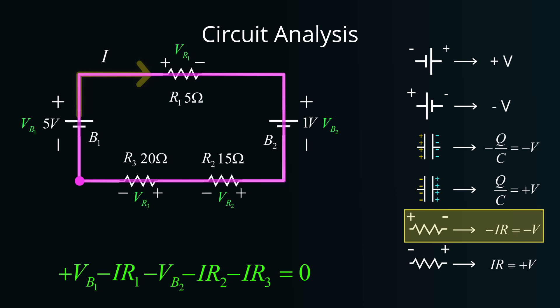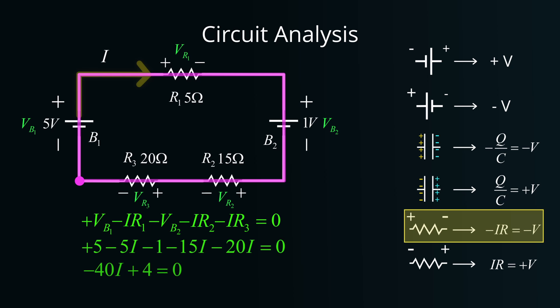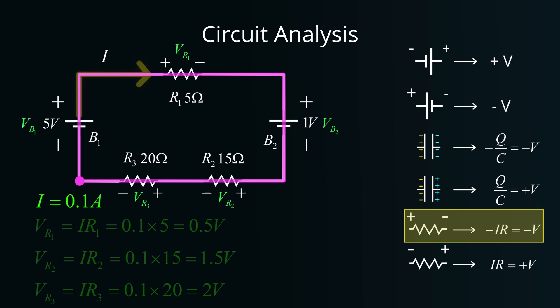Mathematically, our KVL equation thus can be written as follows. With the given values for each component, we can now solve for the unknown current I. Finally, using the current, we can determine the voltage drop across each resistor as follows.